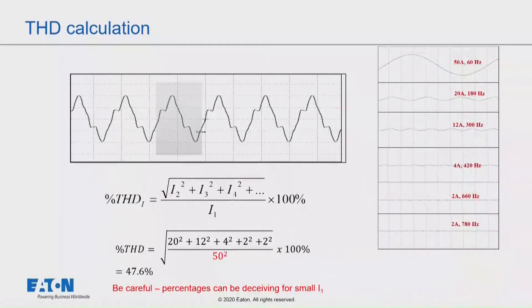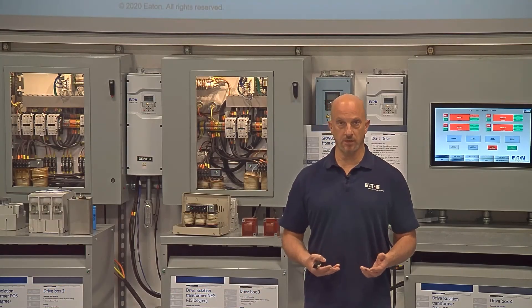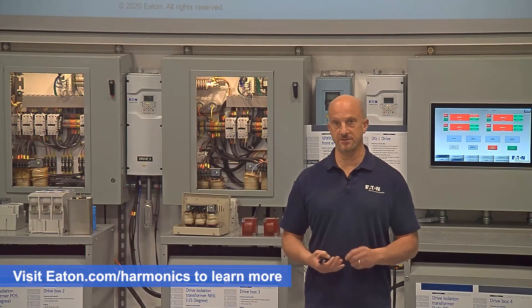But the percentage looks like it's through the roof. So I always warn people, don't get caught up in the percentages. The actual amps of harmonics are what's doing the work and doing the problems that you see in the power system, the overheating and so forth.